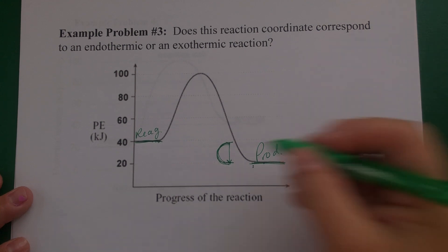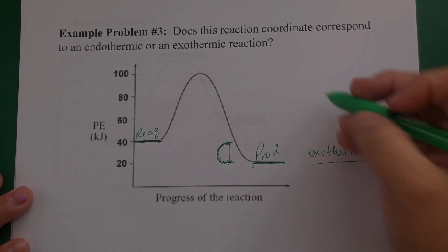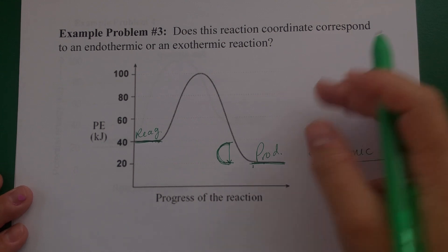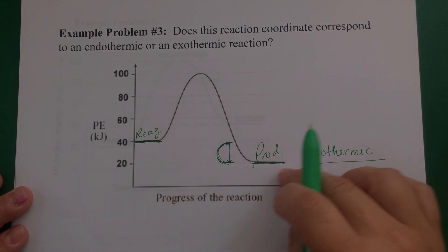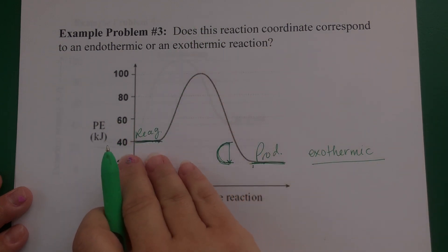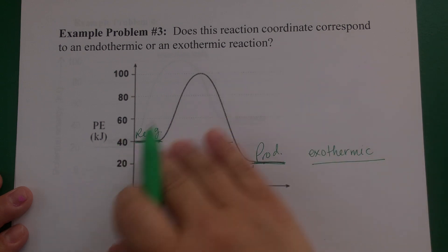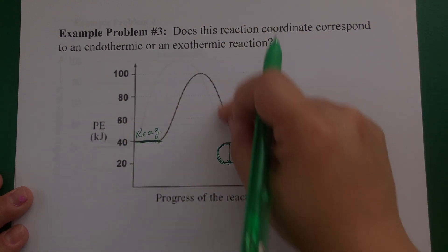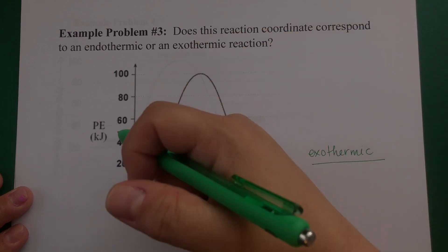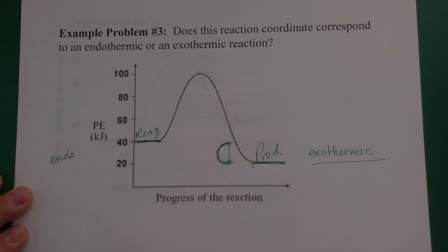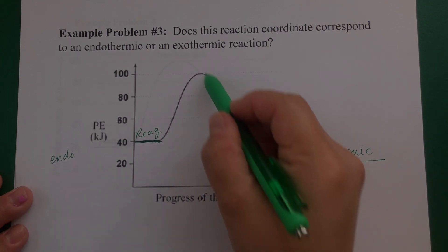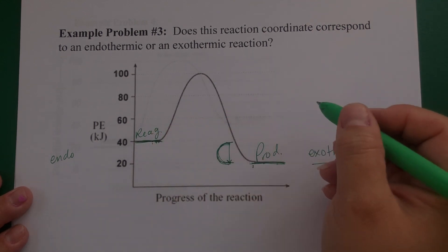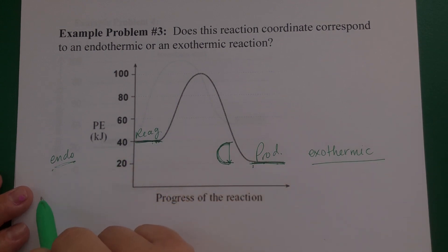For every reaction in the forward direction, you can absolutely have a reaction in the opposite direction. When you have a question like this, you always assume the forward direction. But if you were doing the opposite direction — where products become the reagents — that process would be endothermic, because the products have to take in energy to become the higher-energy reagents. They borrow heat — that's endothermic.